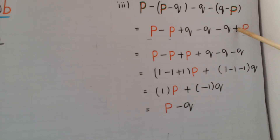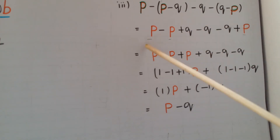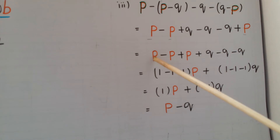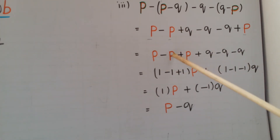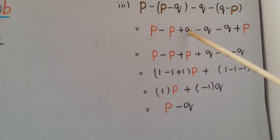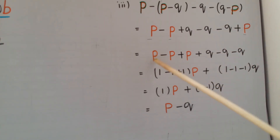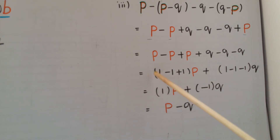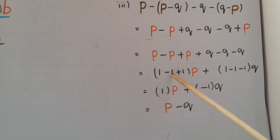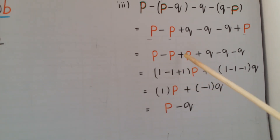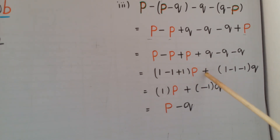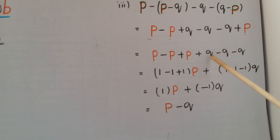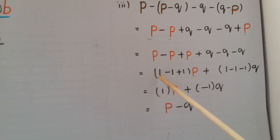After removing brackets, underline the like terms — all p terms together and all q terms together. We get: p minus p plus p for the p terms, and plus q minus q minus q for the q terms. Take p as common: (1 minus 1 plus 1) times p. Take q as common: (1 minus 1 minus 1) times q.